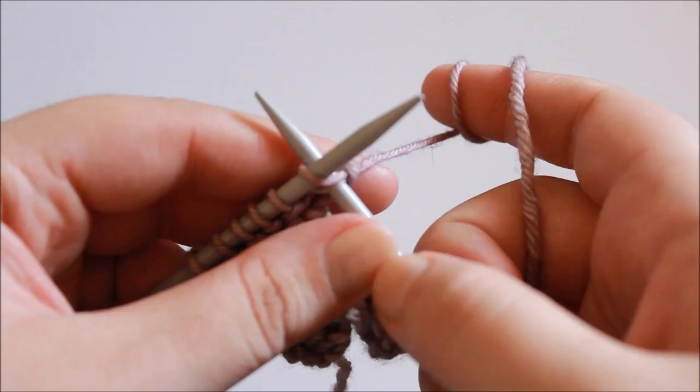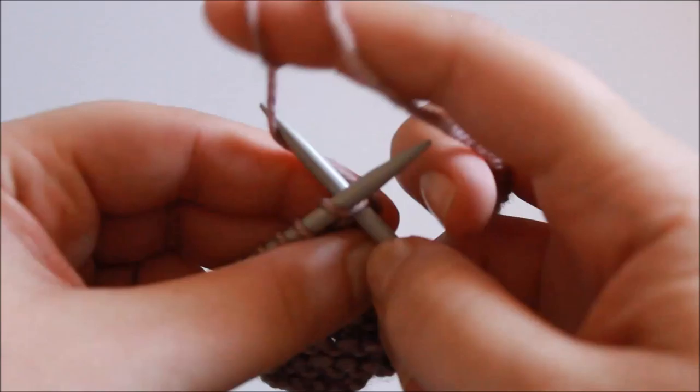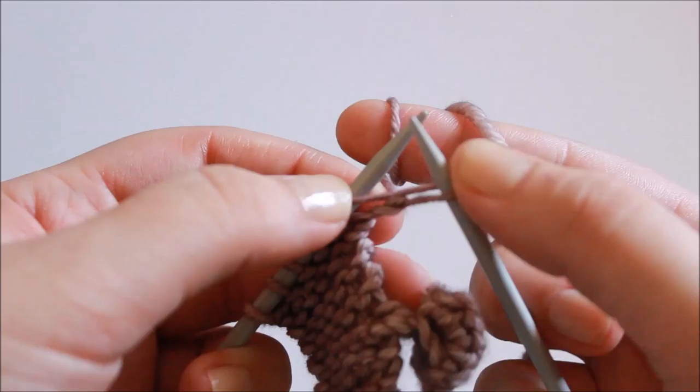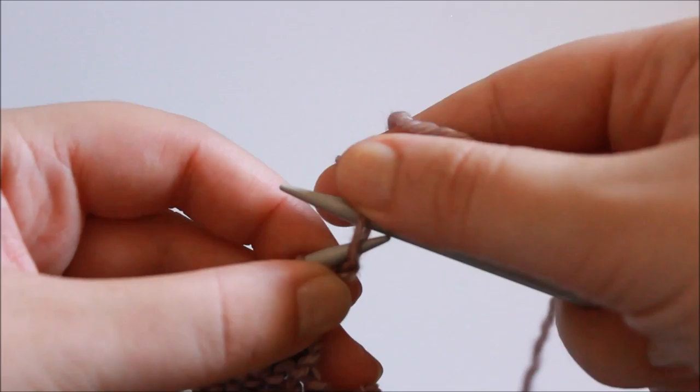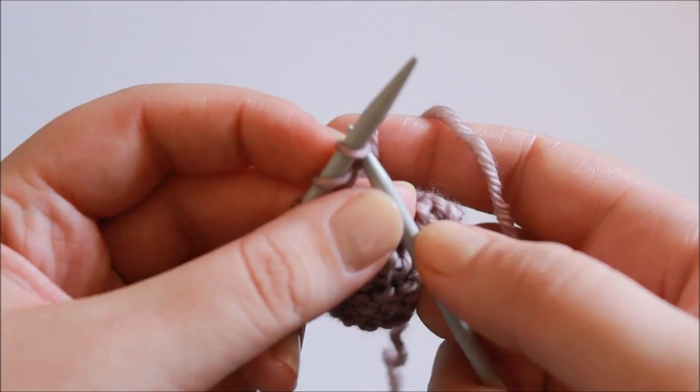So I like to use the knitted cast on method for this, which means I pretend like I'm just knitting into the next stitch, but then instead of sliding it from the left hand needle once worked, I take this new loop that's on my right hand needle and slip it onto the left hand needle, creating a new stitch.